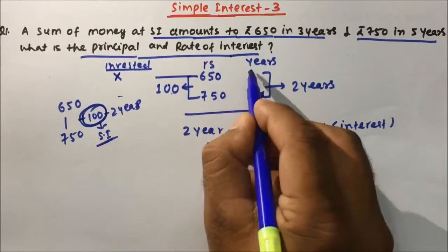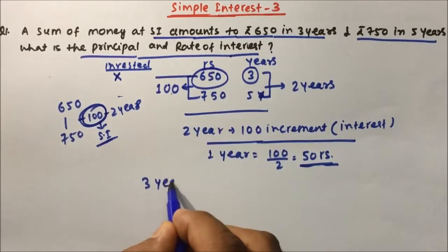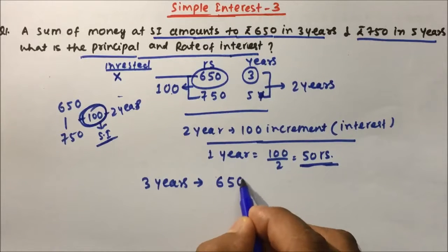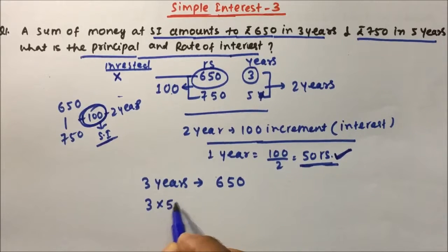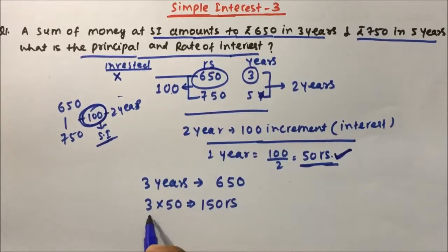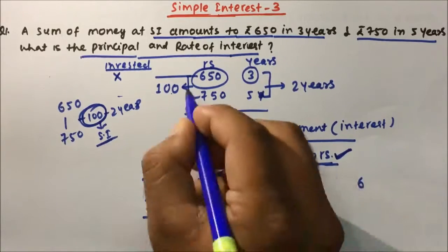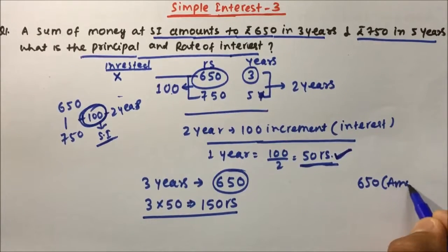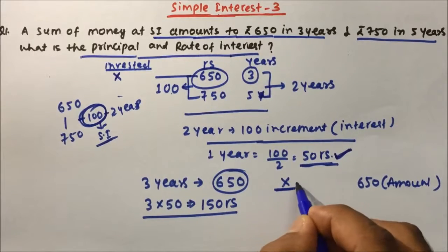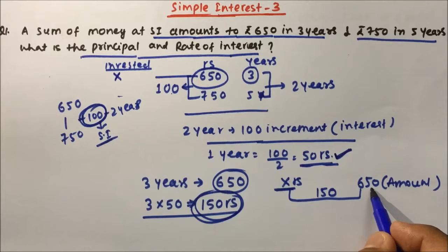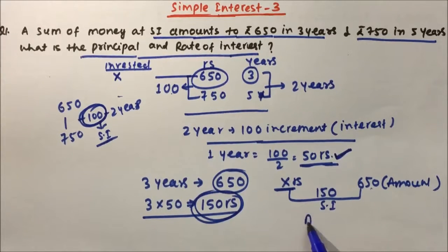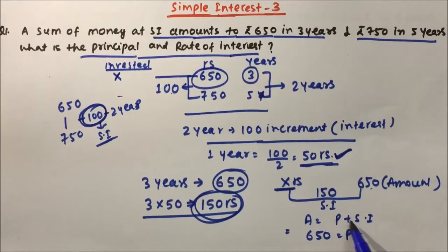In 3 years your money is becoming 650 rupees, and in 1 year the interest is 50 rupees, so in 3 years the total interest will be 150 rupees. Now 650 is the amount, so amount equals principal plus simple interest. Amount is 650, simple interest is 150, so the principal will be 500 rupees.